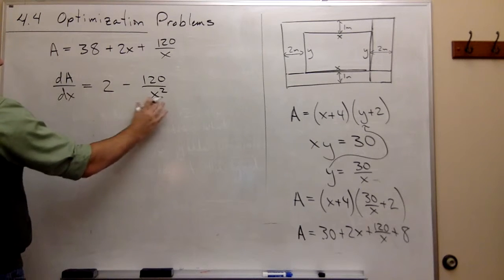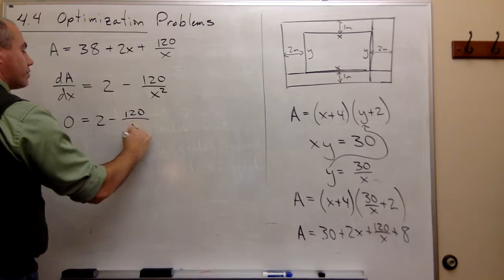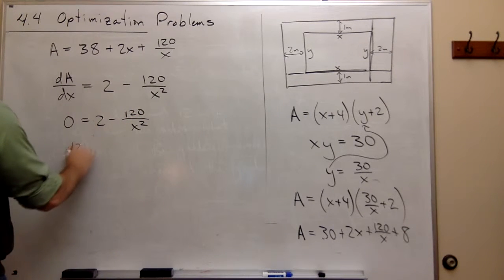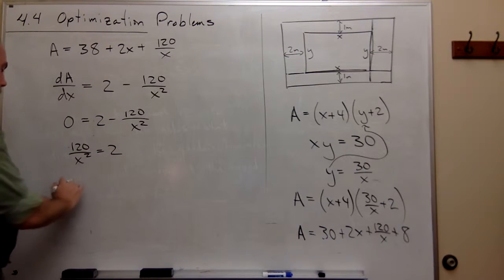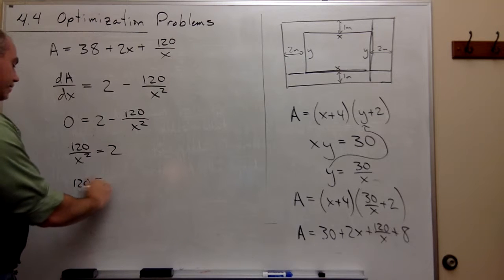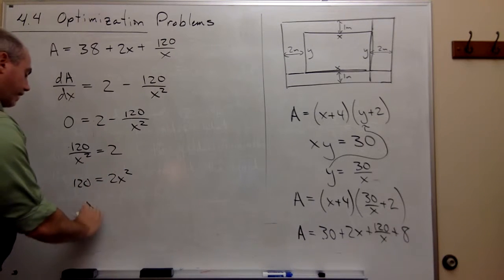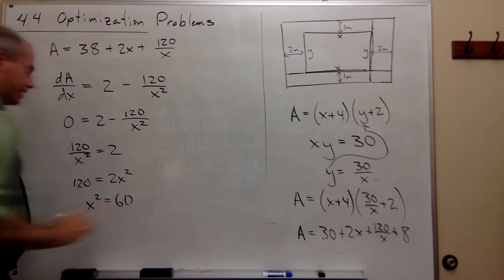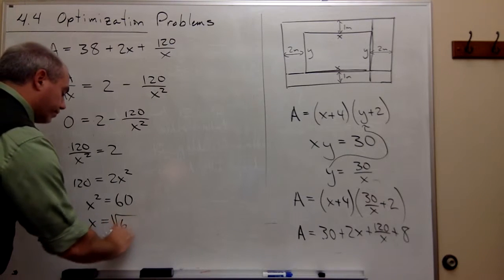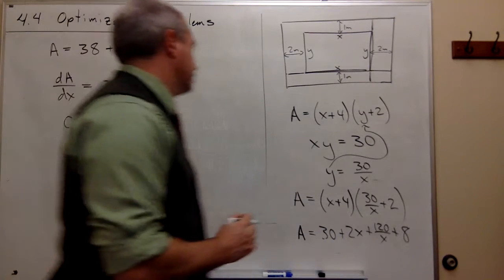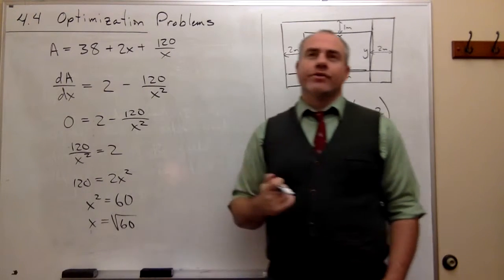So I set this equal to 0. I get 2 minus 120 over x squared. So 120 over x squared is 2, or 120 is equal to 2x squared. I can divide both sides by 2, and if I do, I get that x squared is 60, and x is the square root of 60. So x is the square root of 60.